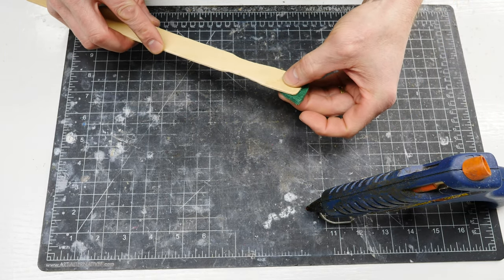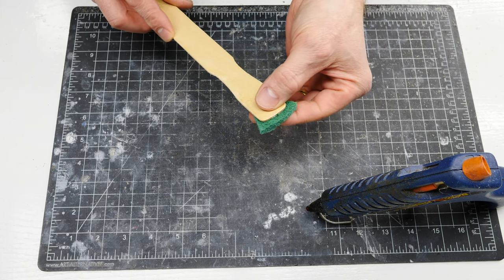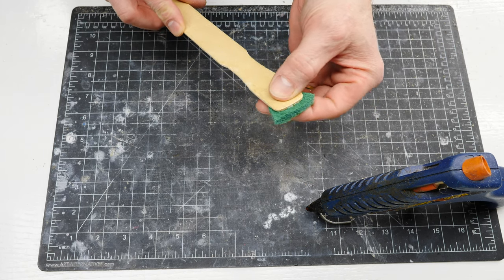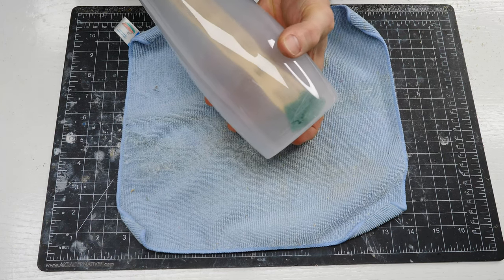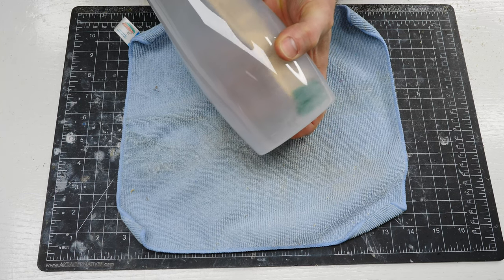I'm going to take a paint stick and put on a little piece of this green scrubby pad so that I can reach down into the corner and try to finish that to the same level of finish as everything else.